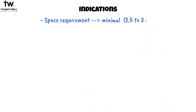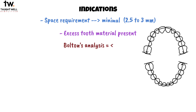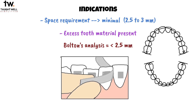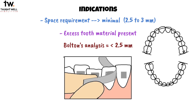Indications for proximal stripping include cases where the space requirement is minimal, typically around 2.5 to 3 mm. It is commonly performed when there is an excess of tooth material, as indicated by Bolton's analysis, usually less than 2.5 mm. While it is frequently done in the mandibular anterior segment, it can also be performed in other areas of the dentition based on the specific needs of the patient.